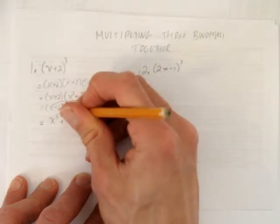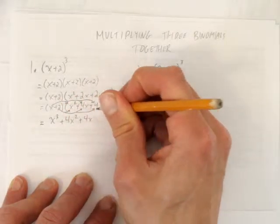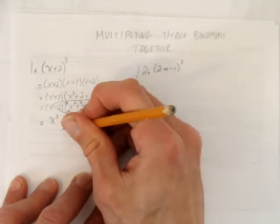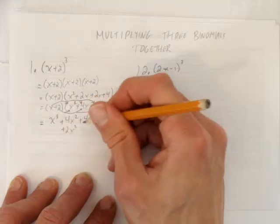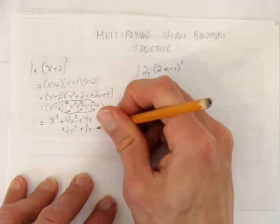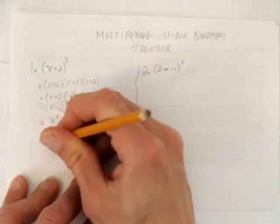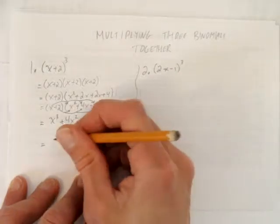Now, multiply the 2 times each thing in the second brackets. You'll notice I wrote it on two lines. That just makes it easier, at least for me, to add it at the end here.